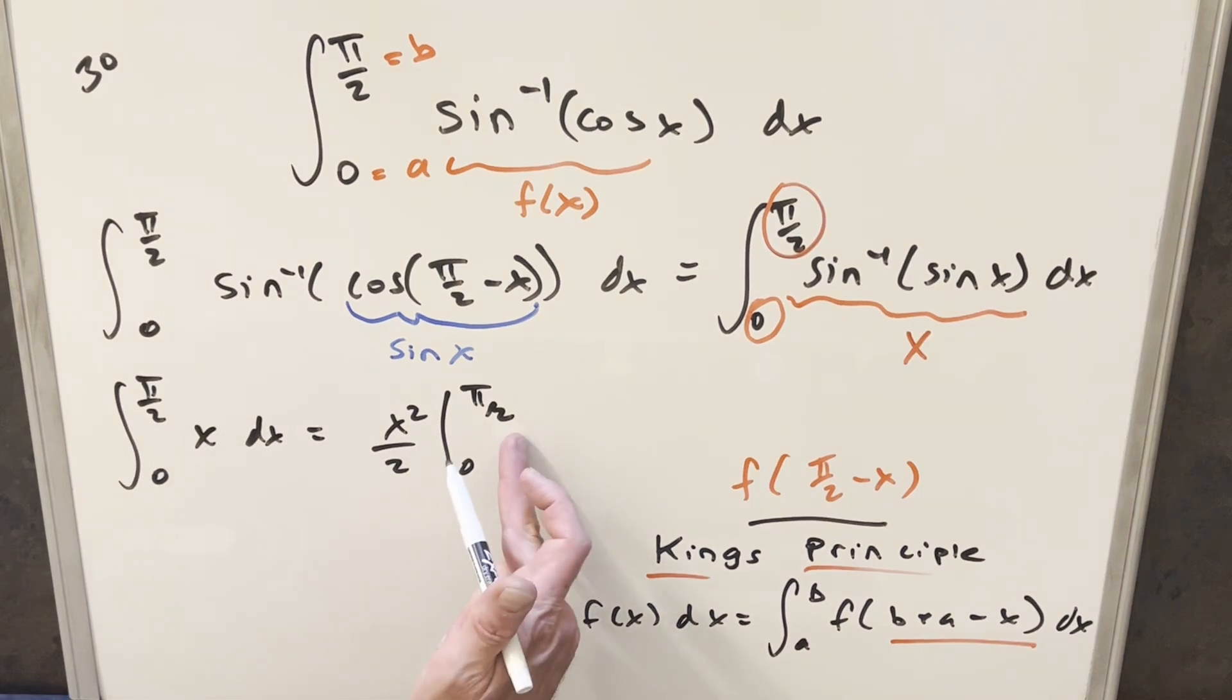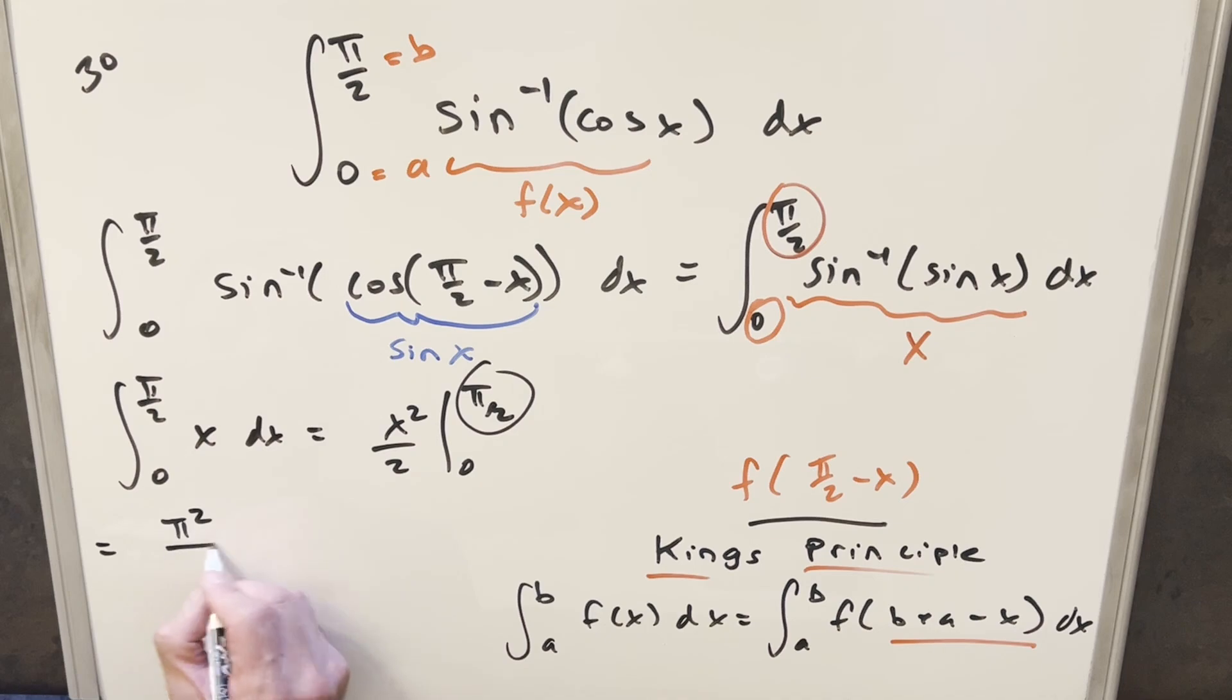The value at 0 is going to be nothing, so we just need to plug in pi over 2. Squaring that, we get pi squared over 4 divided by this 2 here. So for my final solution we just get pi squared over 8.